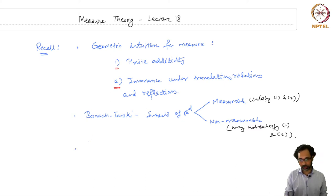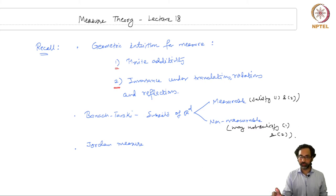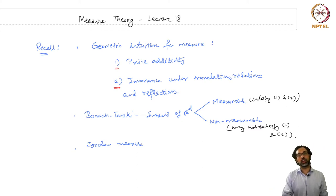We started off with the concept of a Jordan measure, which was defined via the volume of boxes, and then we gradually increased our classes of subsets of R^d under consideration — from boxes to finite unions of boxes and then to Jordan measurable sets. But we still felt that even though the Jordan measure respected finite additivity and invariance under translations, rotations and reflections for Jordan measurable sets, it left out many important subsets of R^d, such as open sets which were not Jordan measurable.